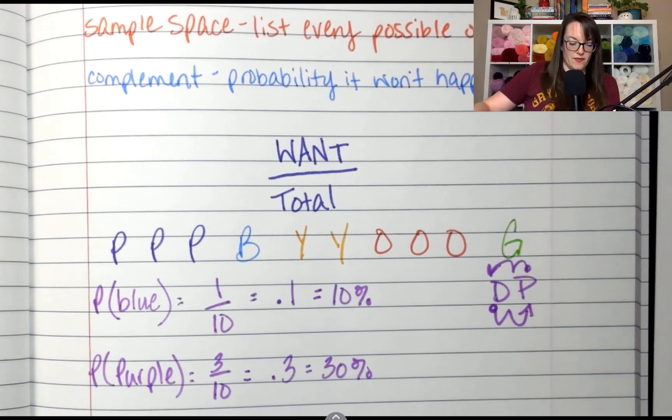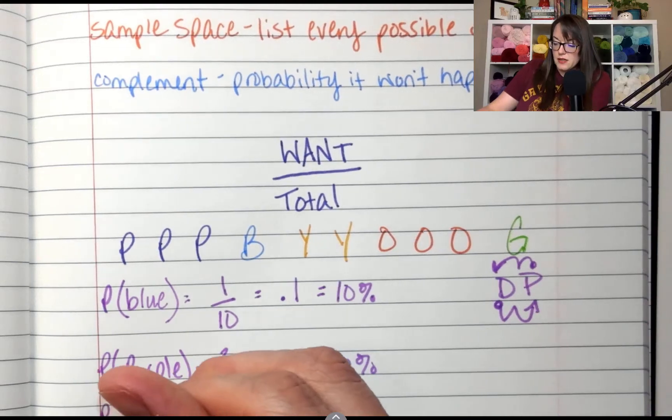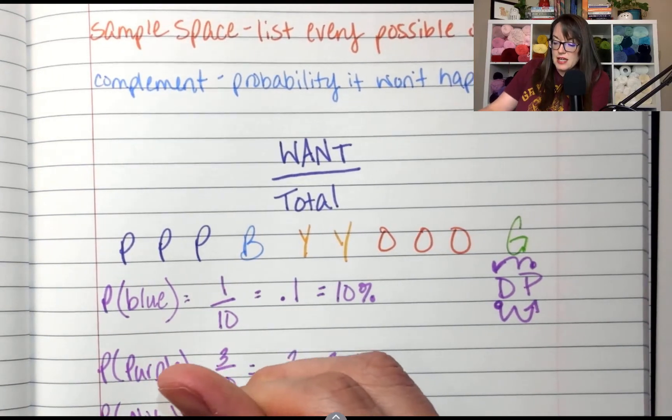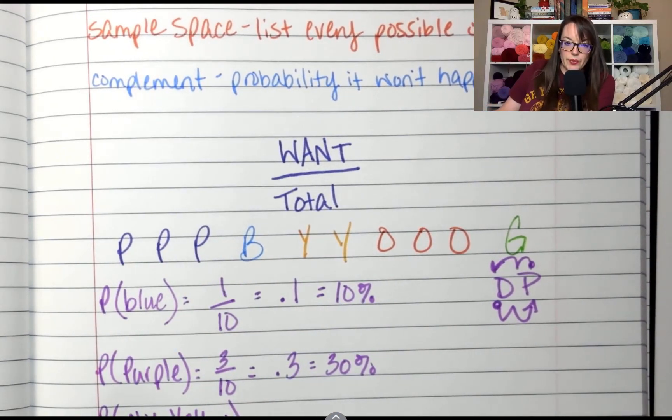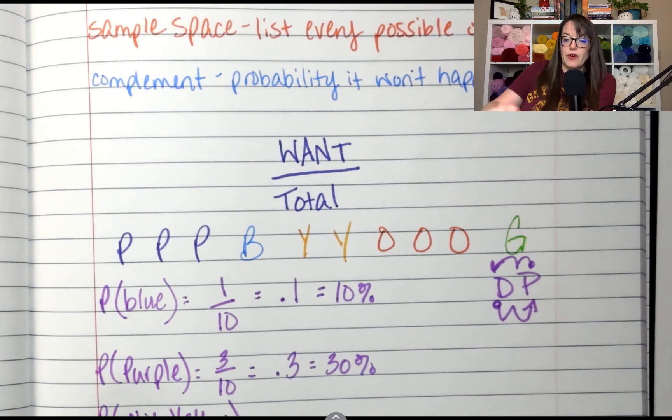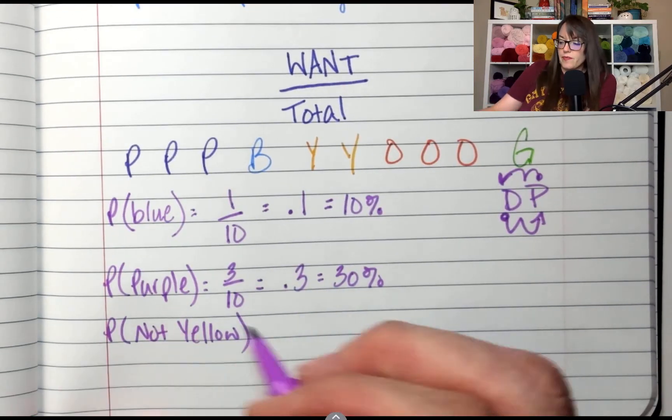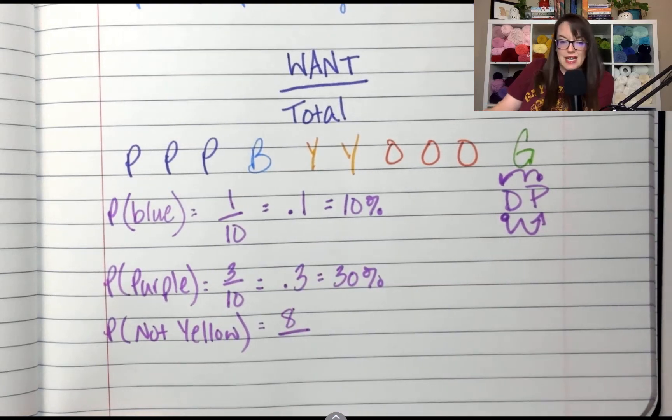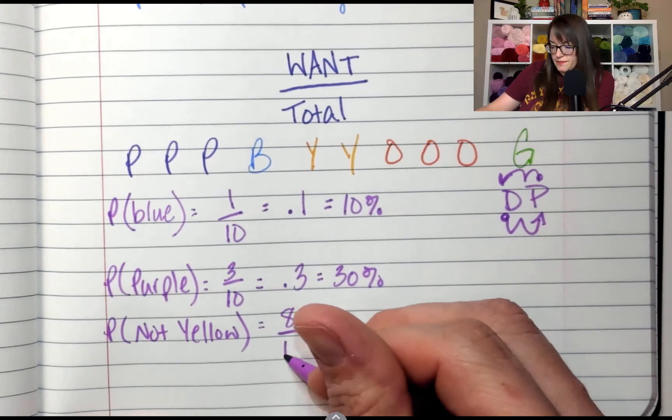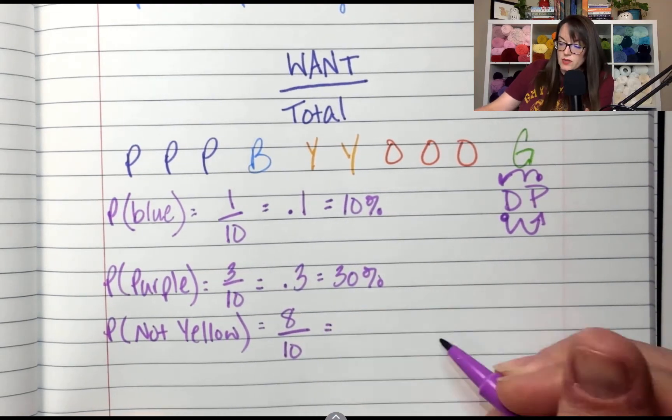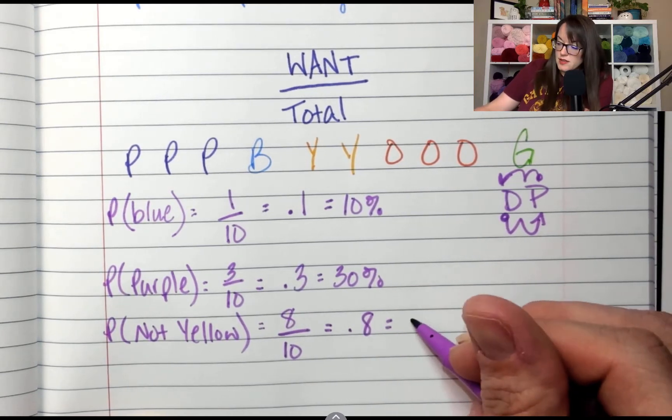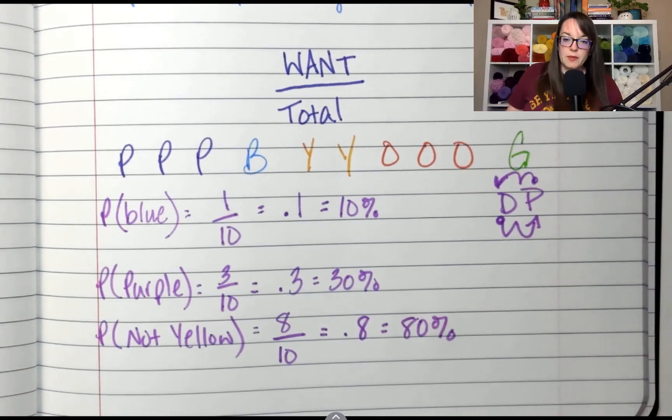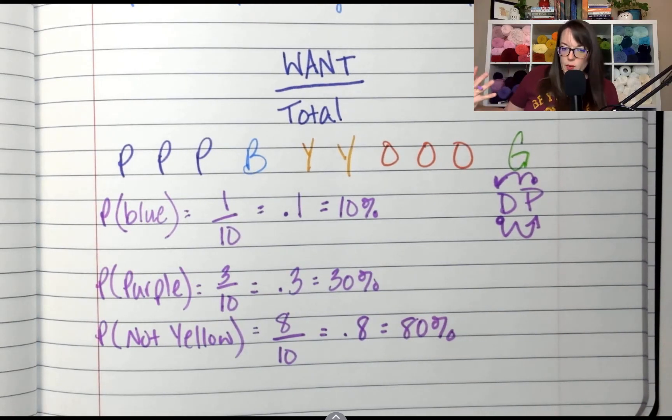All right. So speaking of that, let's look at the probability of not yellow. How many of these are not yellow? There are eight. Let me scoosh this down. There are eight not yellow out of how many total? Ten. And let's write this as a decimal. And now as a percent. Eighty percent.